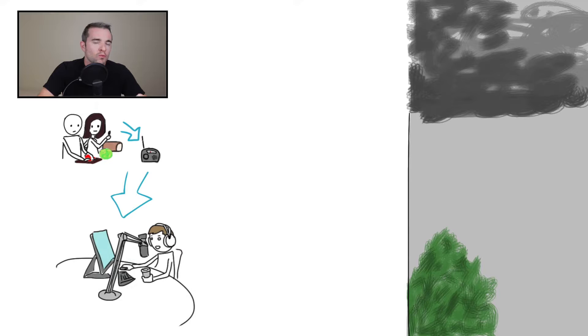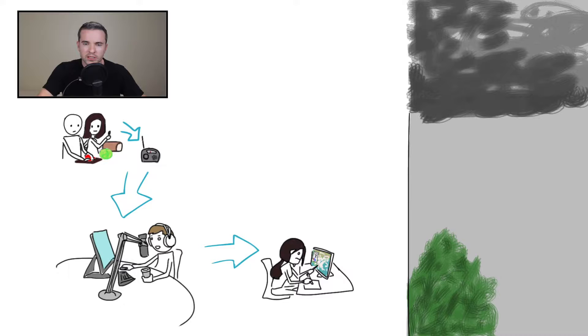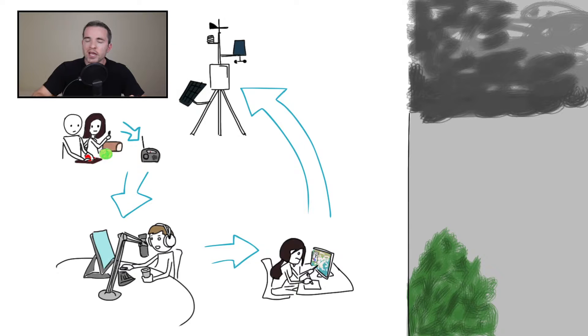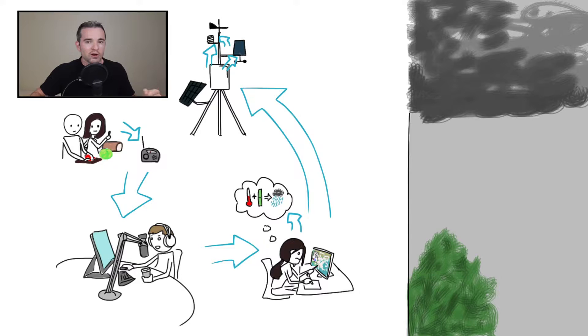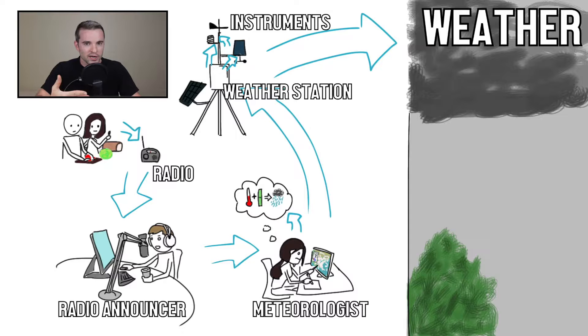The sound coming out of the radio is a function of the radio announcer. What the radio announcer says is a function of the weather report sent to him by the meteorologist. What the meteorologist writes is a function of the data from the weather station, interpreted through her experience and expertise. The data presented by the weather station is a function of all the instruments attached to it, and the instruments are a function of the weather itself. So there are at least five observables involved in this entire process.